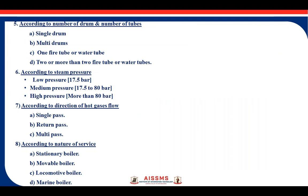To make a large amount of steam for different industrial applications, we can go for single drum or multi-drum configurations. For pressure classification, low pressure boilers create up to 17.5 bar, medium pressure boilers up to 80 bar, and high pressure boilers create pressure greater than 80 bar.